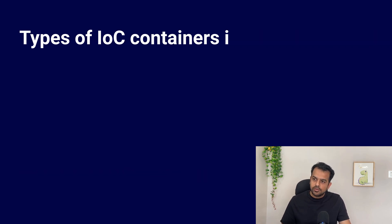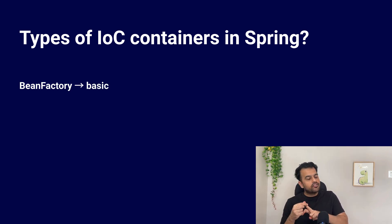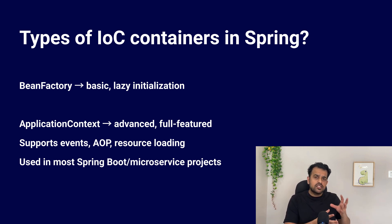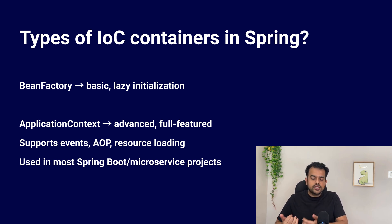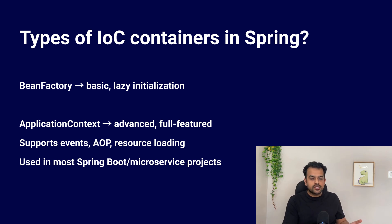Next question: what are the different types of IoC container in Spring? There are two major types: BeanFactory and ApplicationContext. BeanFactory is the earlier, basic container — it loads beans lazily and has very few features. ApplicationContext is the advanced container; it supports events, AOP, resource loading, profiles, and most commonly used features. In almost every Spring Boot application or enterprise microservice, you will see ApplicationContext, not BeanFactory. BeanFactory still exists but is not used much nowadays.